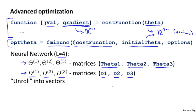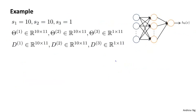In this video, I want to tell you about the idea of how to take these matrices and unroll them into vectors, so that they end up in a format suitable for passing in as theta or for returning as the gradient. Concretely, let's say we have a neural network with one input layer with 10 units, a hidden layer with 10 units, and one output layer with one unit. So S1 is the number of units in layer one, S2 in layer two, and S3 in layer three. The dimensions of your matrices theta and D are given by these expressions — for example, theta one is going to be a 10 by 11 matrix, and so on.